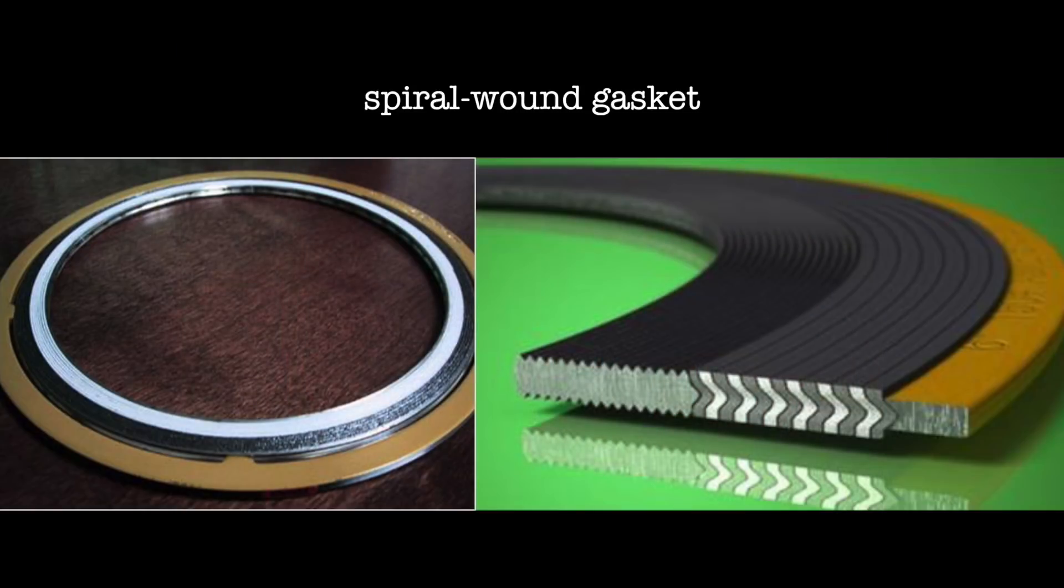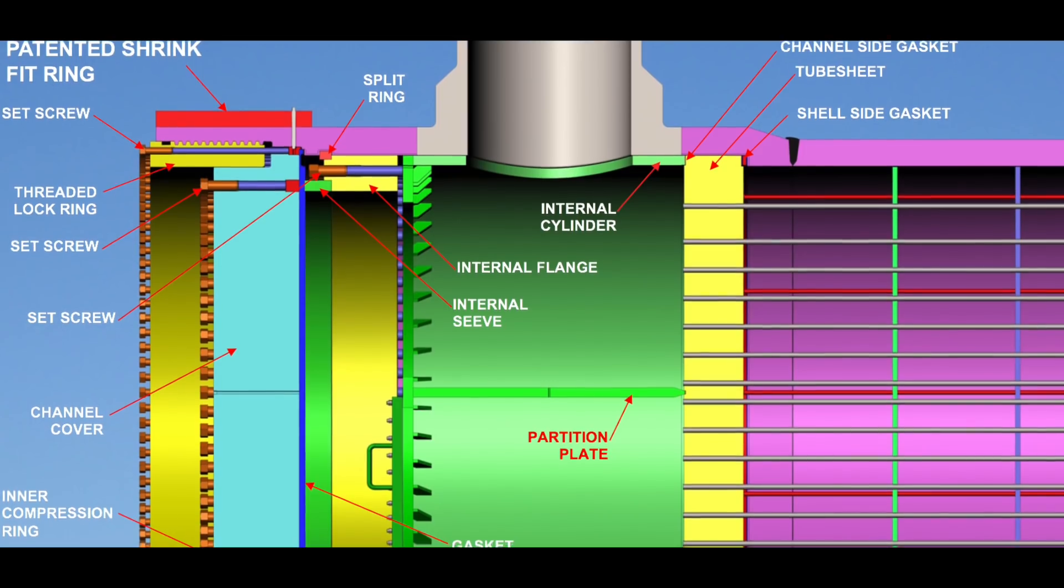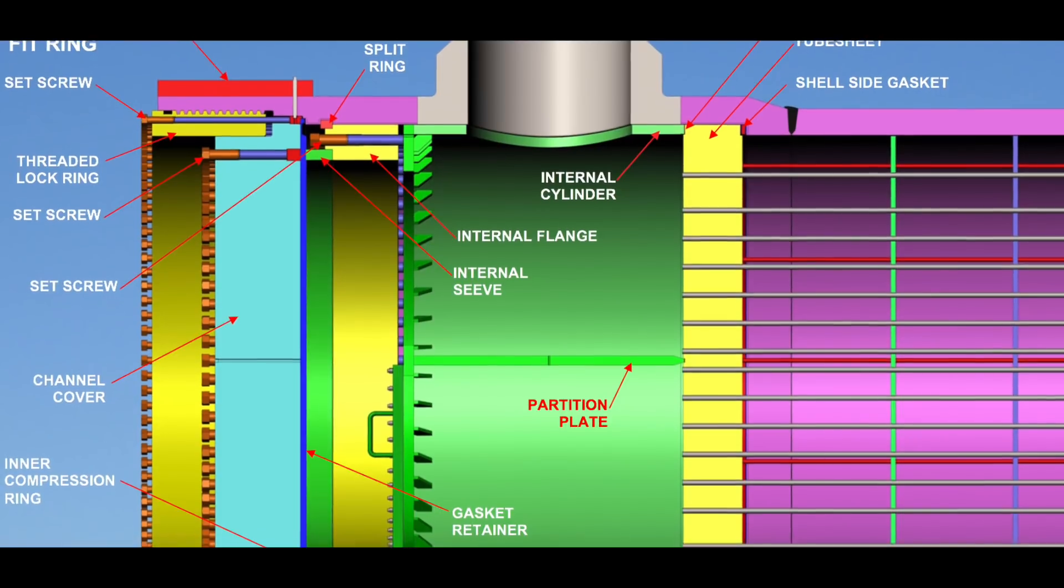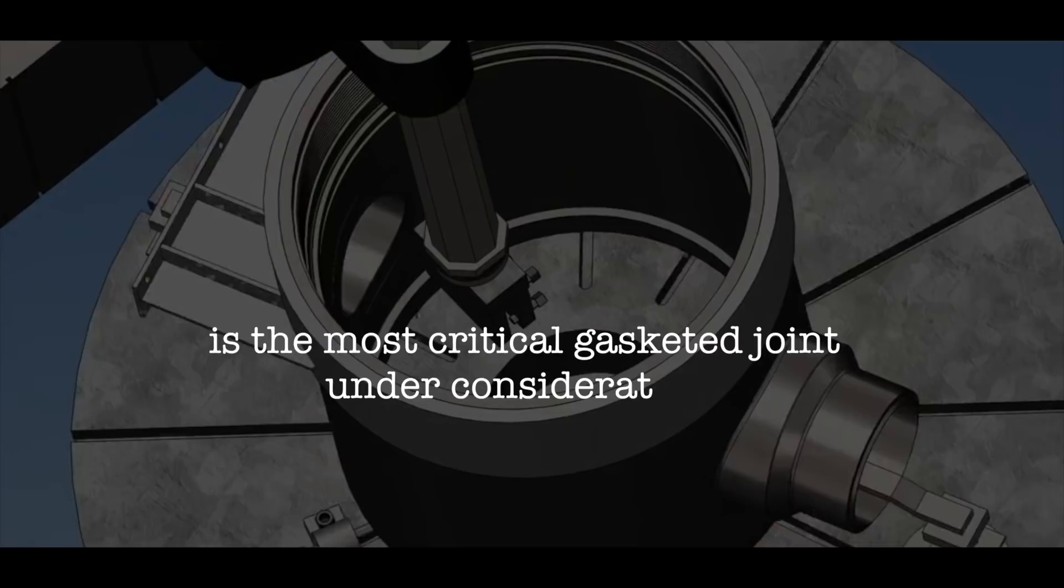And in 2005, the first to replace the spiral wound gasket with a cam profile gasket. The shell to tube sheet joint in a high-high screw plug is the most critical gasketed joint under consideration.